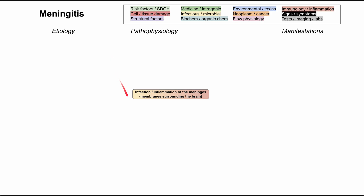Meningitis is, as I mentioned, an infection with subsequent inflammation of the meninges. The meninges are three membrane layers surrounding the brain inside the cranium. There are many ways to work our way back and think about the etiology of meningitis, and we'll break it down in a few different fashions.